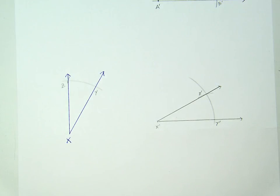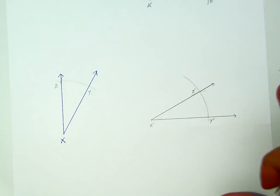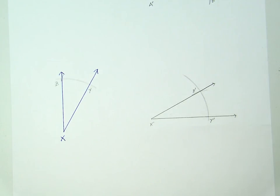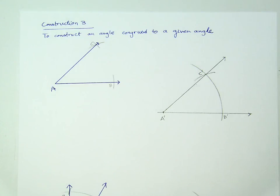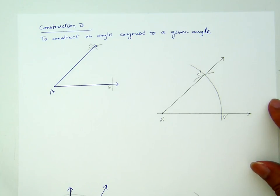For that, we are now done with copying angle X. Now, this is Construction 3 in which we are to construct an angle congruent to a given angle.